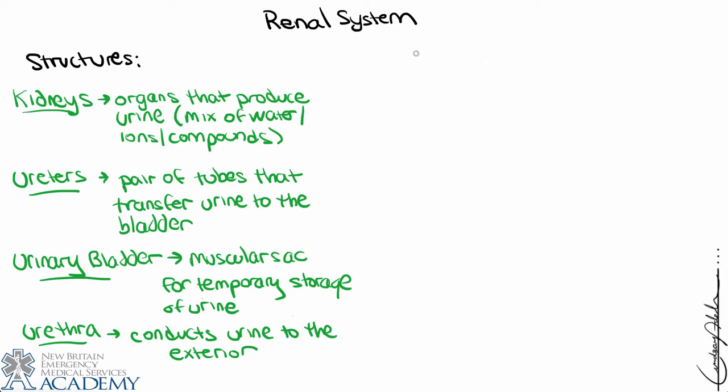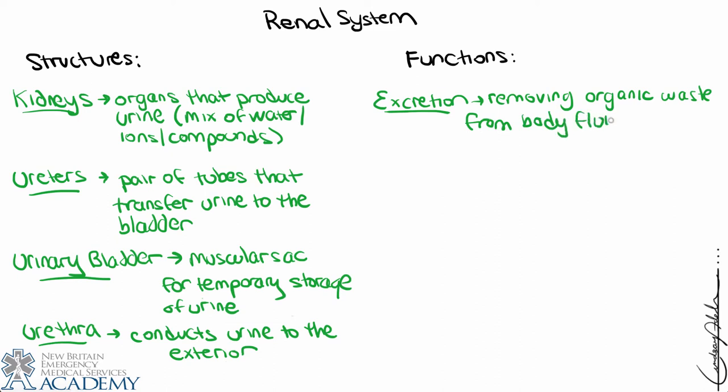Now the functions—I'm going to overview them by categorizing them as three basic ideas. We start with excretion, which basically means removing organic waste from body fluids. Excretion is kind of like filtering, picking and choosing the stuff that we don't want anymore that we need to get rid of because it would be toxic to the body. This is followed by elimination, which is discharge of waste products into the environment.